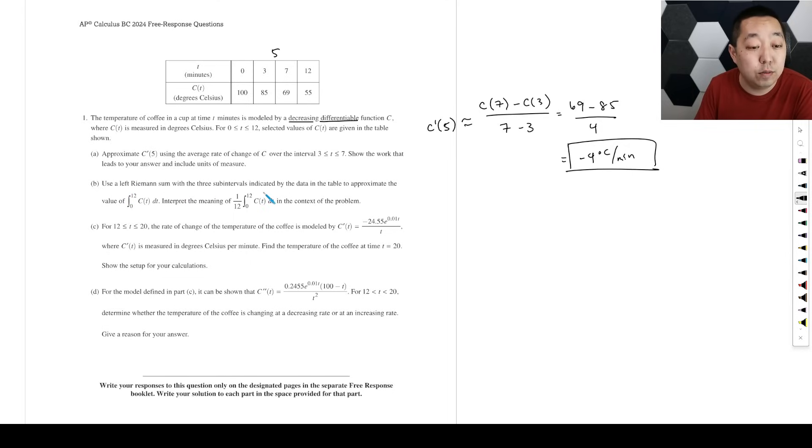Using a left Riemann sum with three subintervals as indicated by the data in the table to approximate the value of this. Interpret the meaning of this. Notice there's a 1/12 over here, so we're approximating this part, and then we're going to use this calculation. This is the average value because you're doing the integral divided by the interval width. The integral from 0 to 12 of C(T) dT. We're going to use three subintervals with a left Riemann sum, so it's approximately equal to—the width of your intervals is 3, this interval width is 4, this interval width is 5. So it's going to be 3 times, and then we use the left point 100, plus this interval width is 4 times the left value in the interval which is 85.